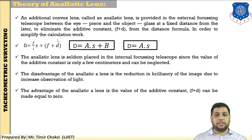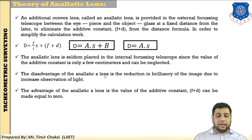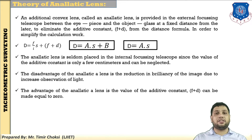Some advantages and disadvantages of the analytic lens: The advantage is that the additive constant F plus D can be made equal to zero, so calculation work is simple. The disadvantage is that some blurring occurs because extra glass or extra lens has been added, causing reduction in image quality and decreased observation light. However, the advantage is that you can simplify the formula directly. A second disadvantage is that adding an external lens increases the initial cost of the tachymeter.